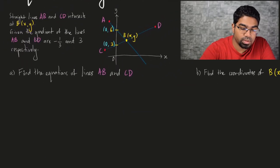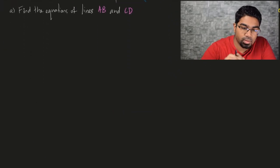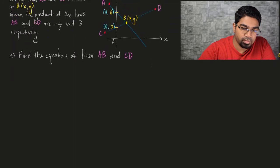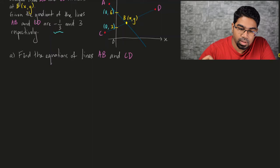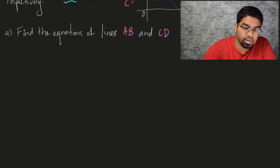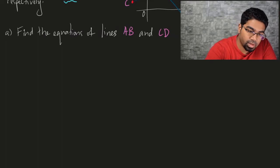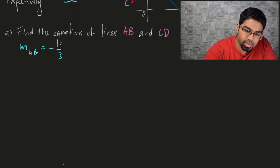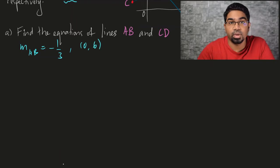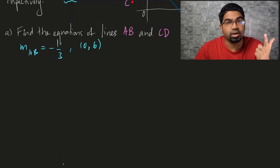First let's look at the equation of AB. We have the gradient of AB is negative 1 over 3, and we have one point on the line AB which is (0, 6). Let's write that down: M_AB = −1/3, and the point (0, 6) lies on line AB. When we have one point and the gradient of the line, we can find the equation of the line.